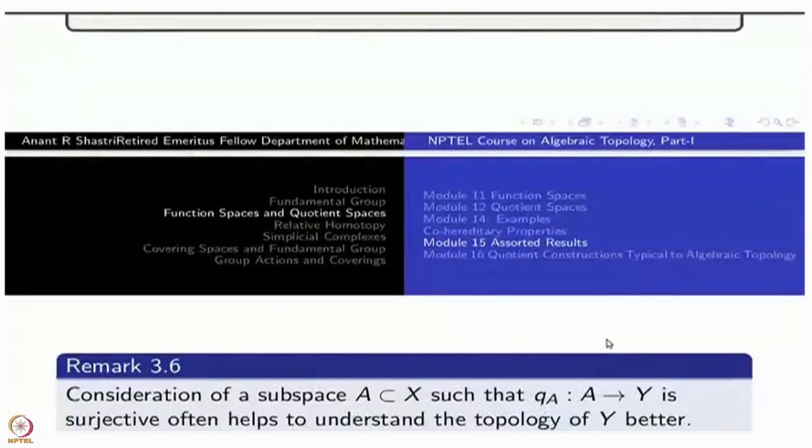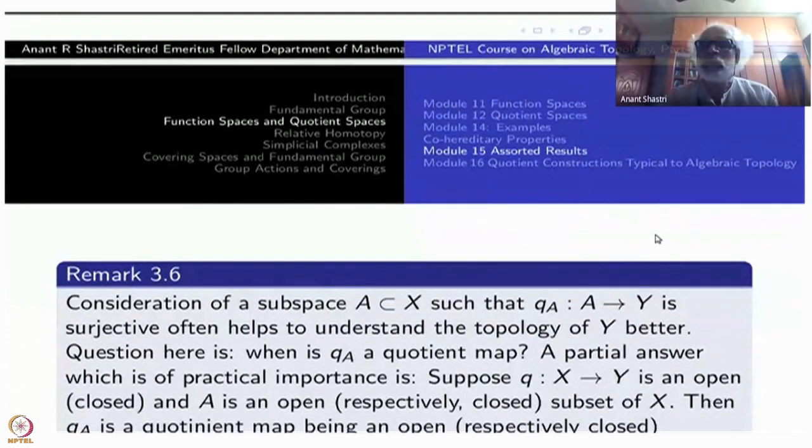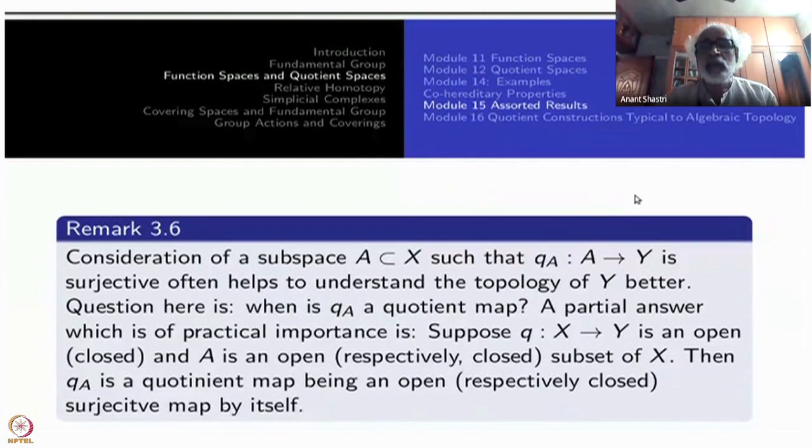Let us start a few assorted things about quotient spaces. We observed that if you restrict the quotient to some smaller subspace in the domain, in the mother space such that the map is still surjection and if that turns out to be quotient map again then that will be of quite help for us.